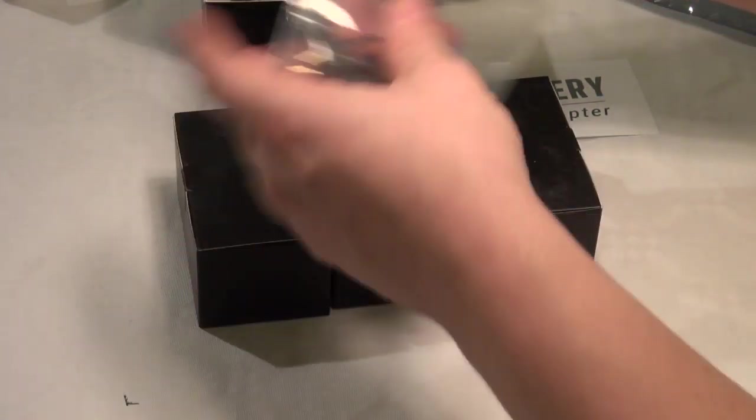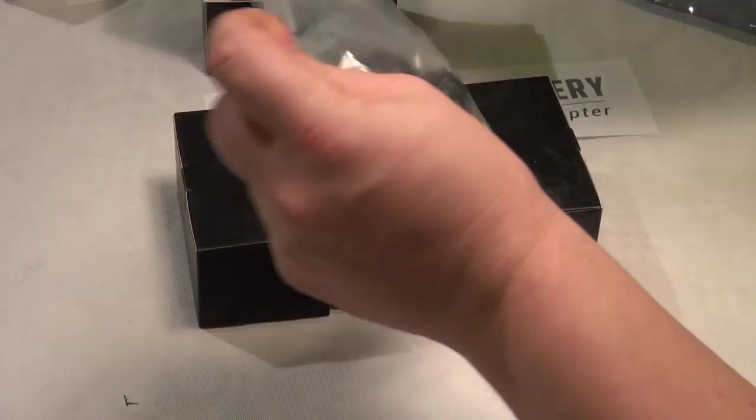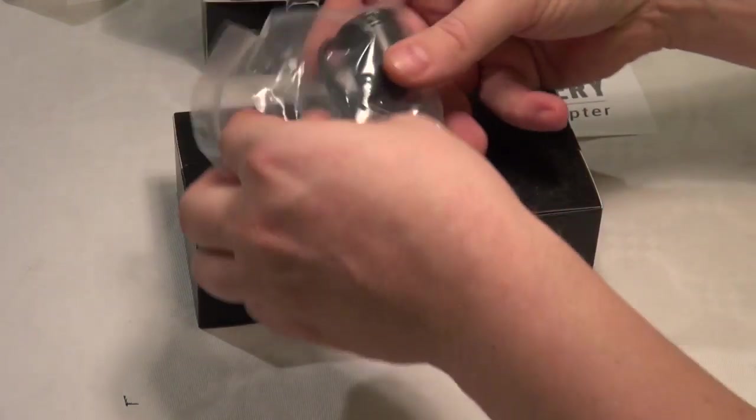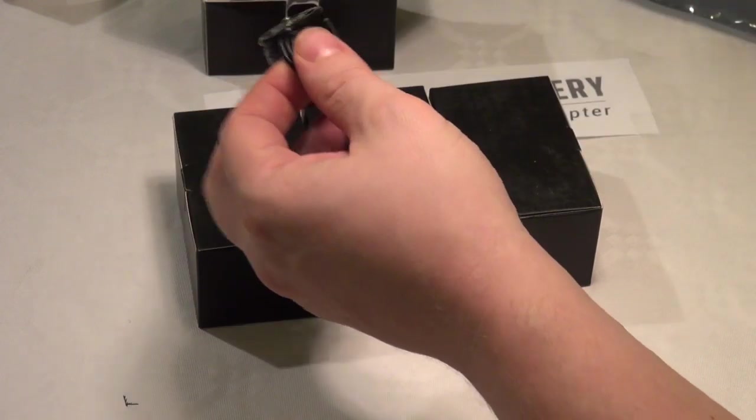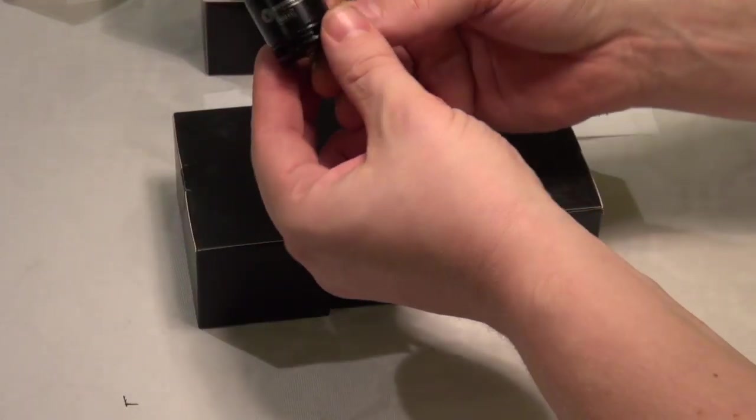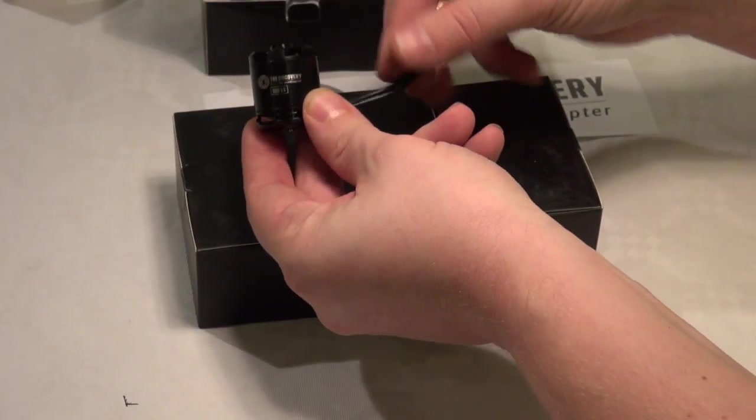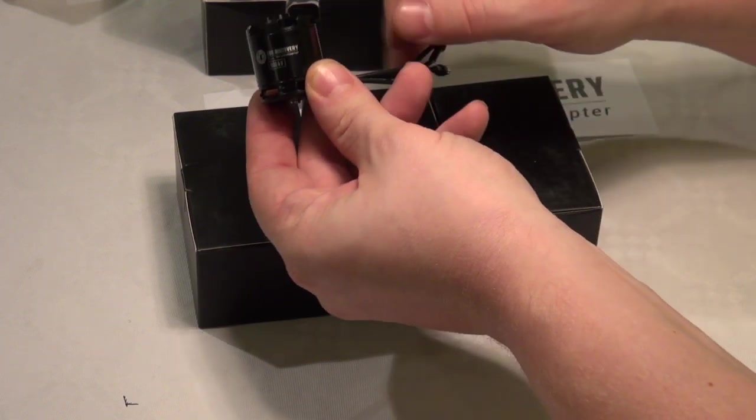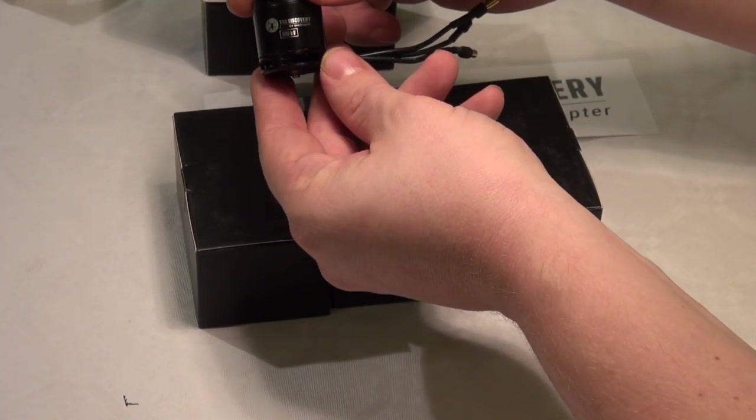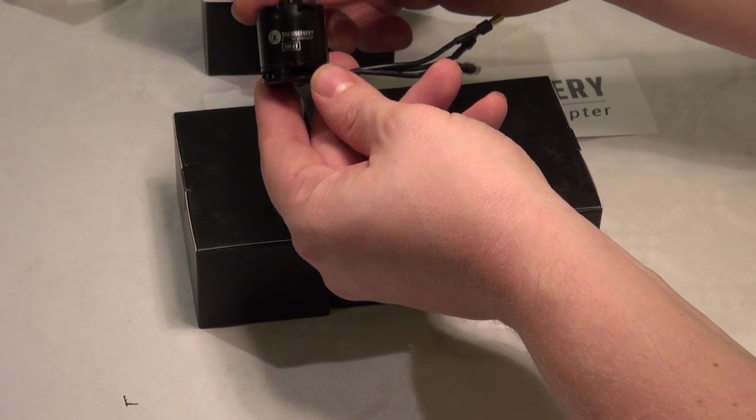So what about the engine? Cut open the bag, and here we have it: the shiny black TBS Discovery 900 kV engine.